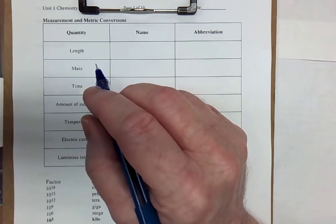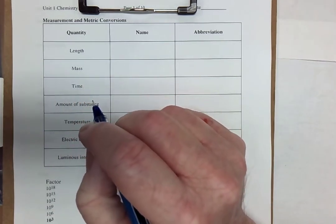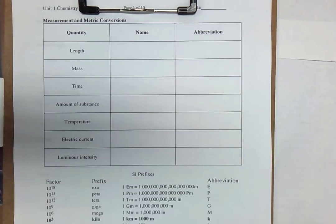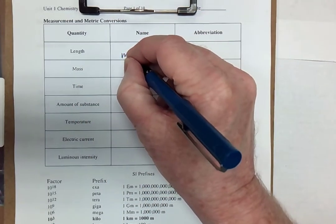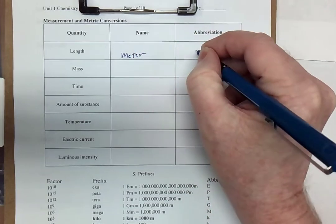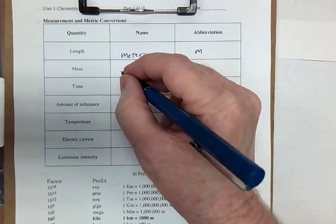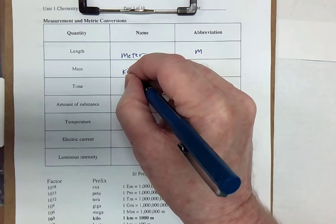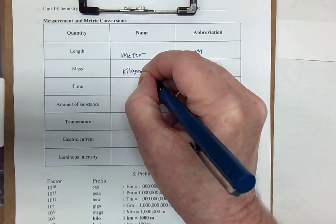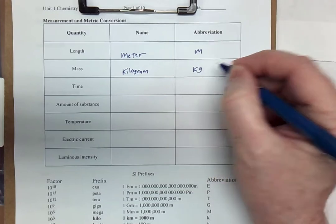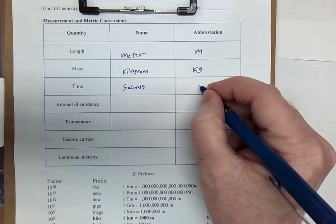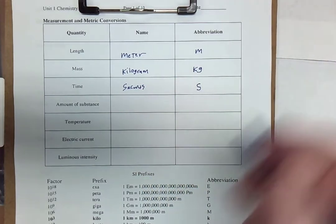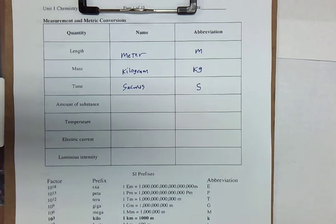So we have what we call seven base units, seven units that we use to define all other units. Length is measured in meters, which is abbreviated M. Mass is measured in kilograms, which is abbreviated kg. Time is measured in seconds, which we abbreviate with an S, and I think most people are familiar with those three.